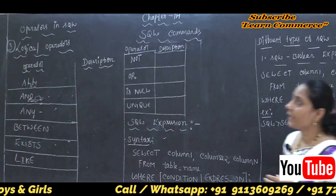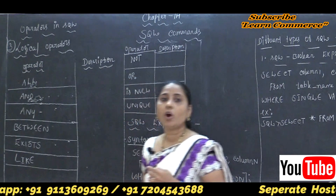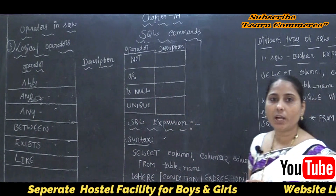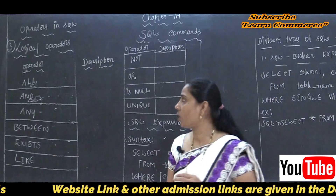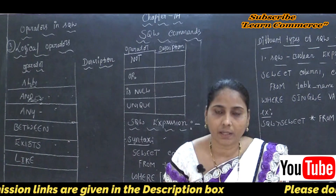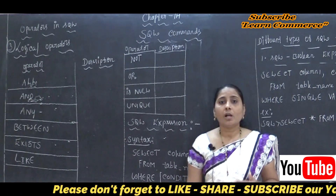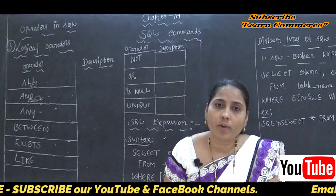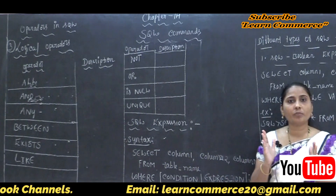In this class, we are going to complete the next operator. The name of the operator is called the Logical Operator. Some of the logical operators available in SQL are: the first operator is called the ALL Operator. The ALL Operator is used to compare a value to all values in another value set. Maybe in one set some values are there — 1, 2, 3, 4.